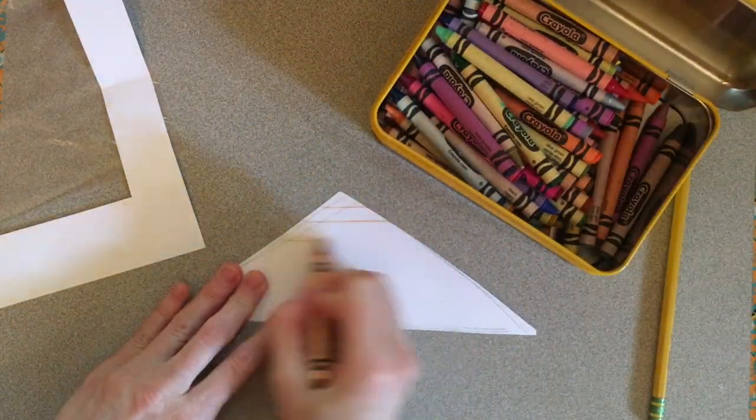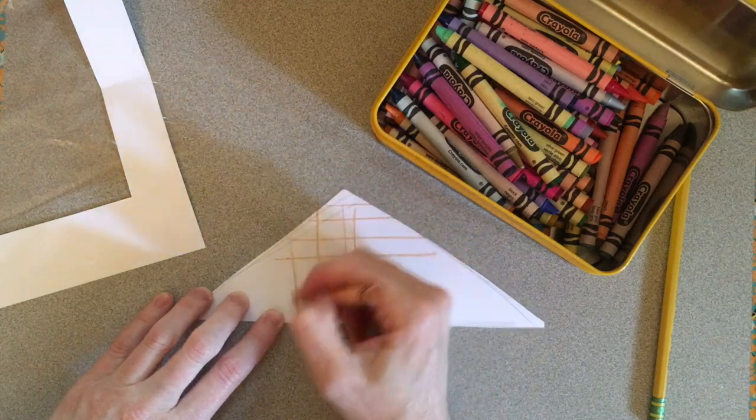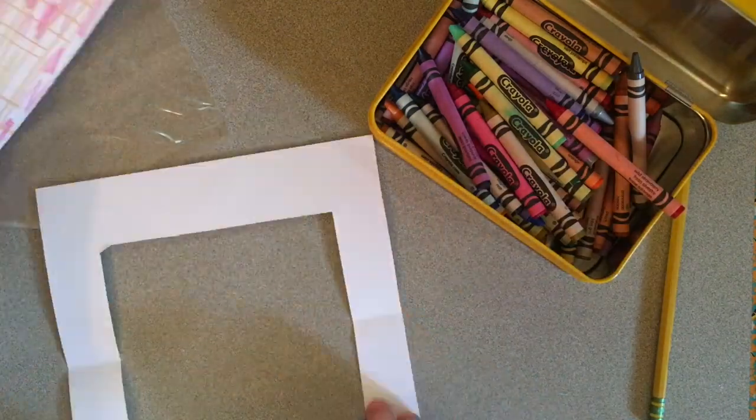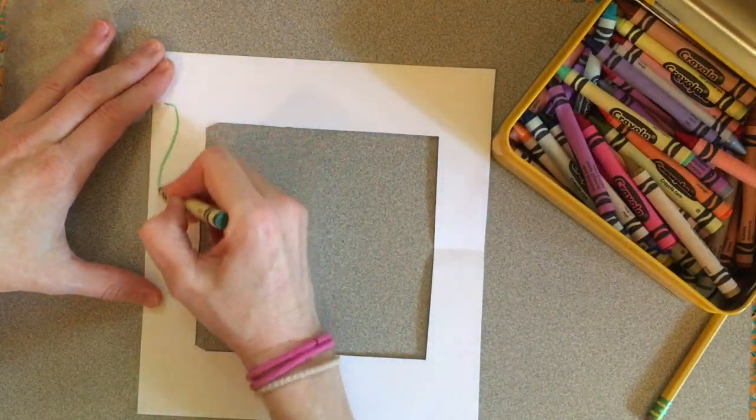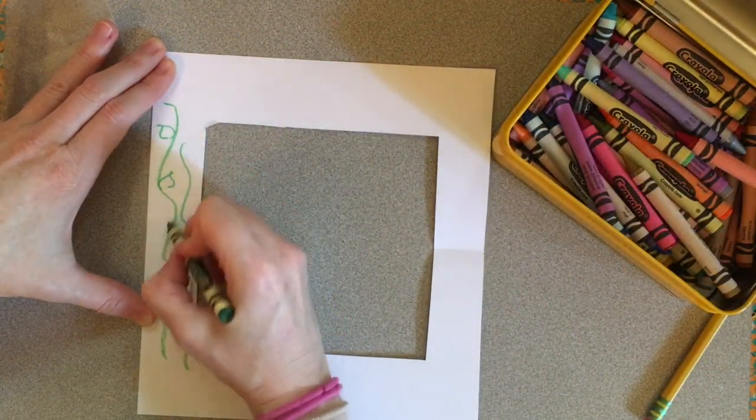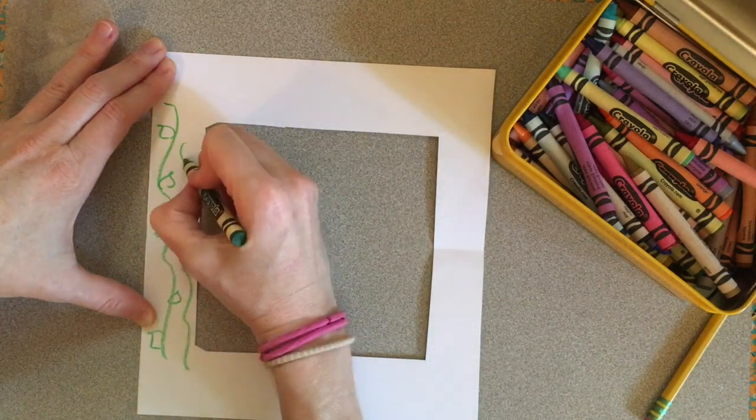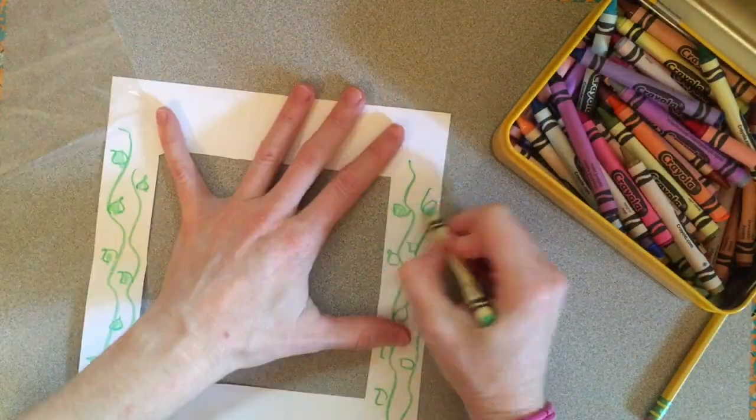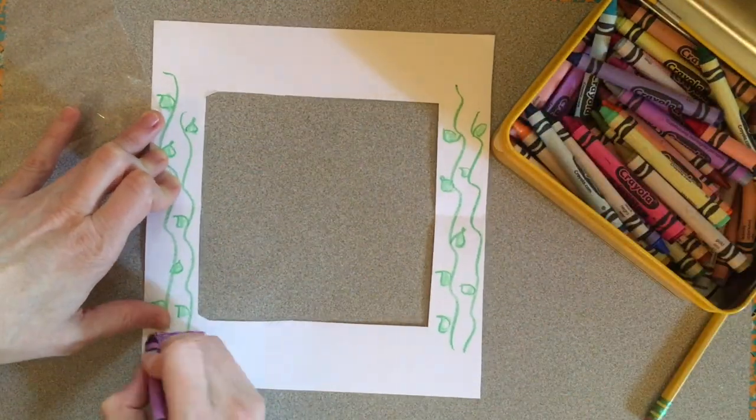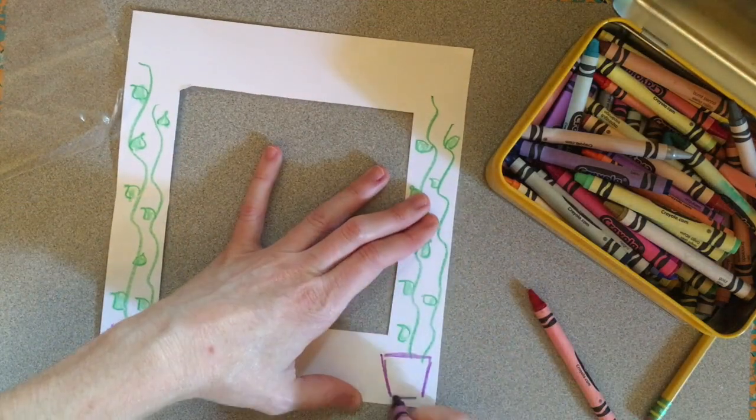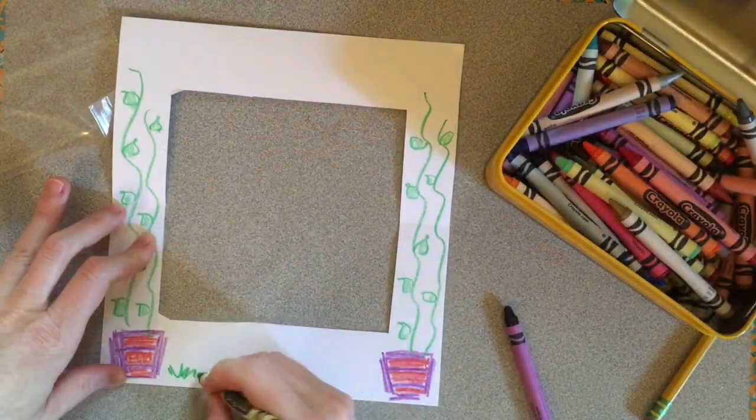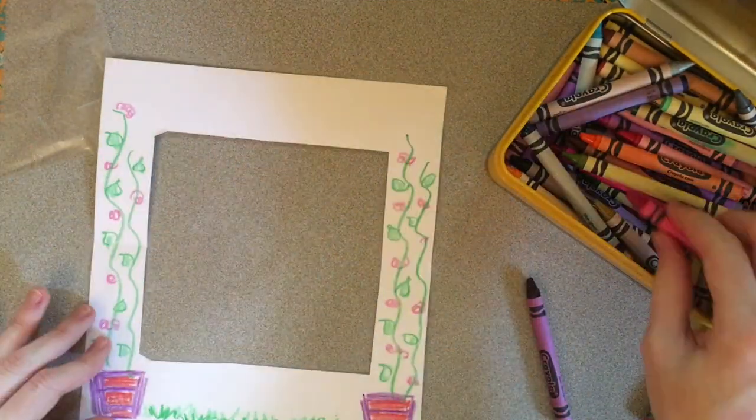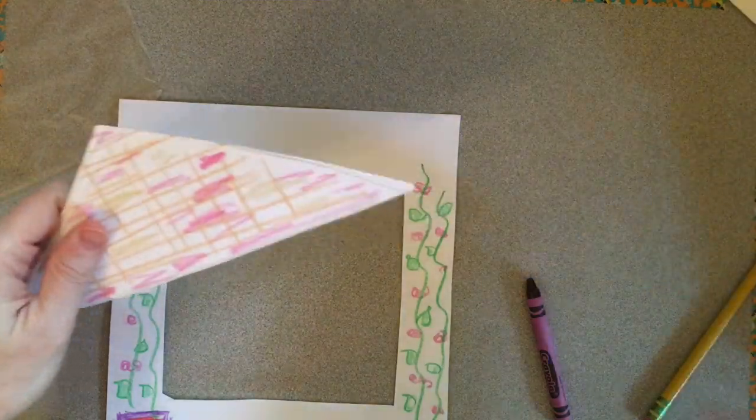So grab your crayons, your pencils, your markers, whatever you have on hand, and try playing with different patterns, using different colors. Mix it up. Then move to the outside of your greenhouse. Living things can also grow in the front.